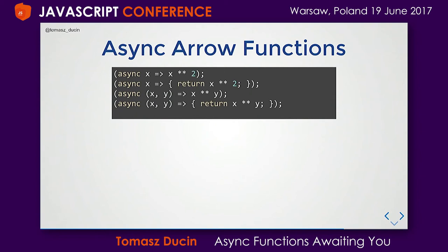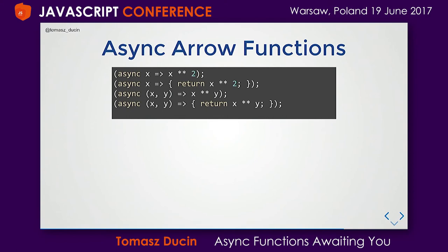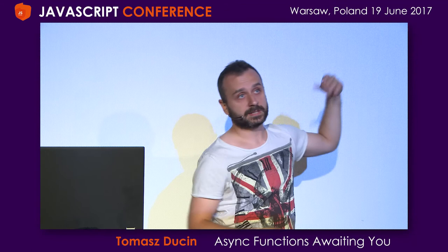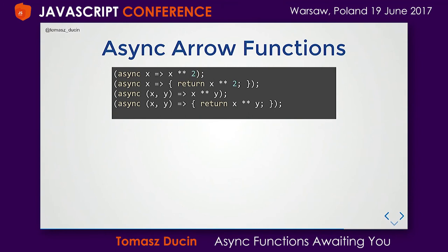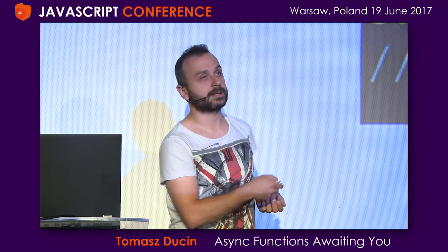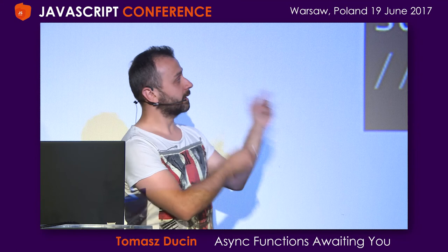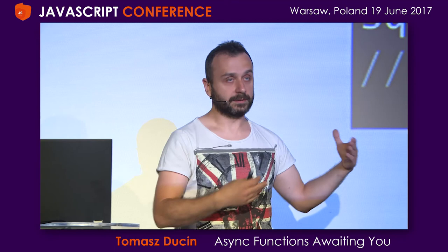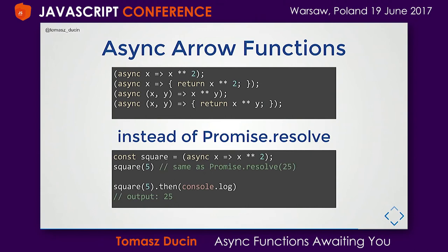We don't only have traditional async functions — we also have async arrow functions with the same syntax. We can have implicit or explicit return, and omit parentheses with exactly one parameter. An async function works exactly the same way as promise.resolve, because an async function or coroutine always returns a promise. So const square = async x => x * x, and calling square(5) is exactly the same as promise.resolve(25). Keep in mind an async function doesn't return a value directly — it returns a promise that resolves with that value.